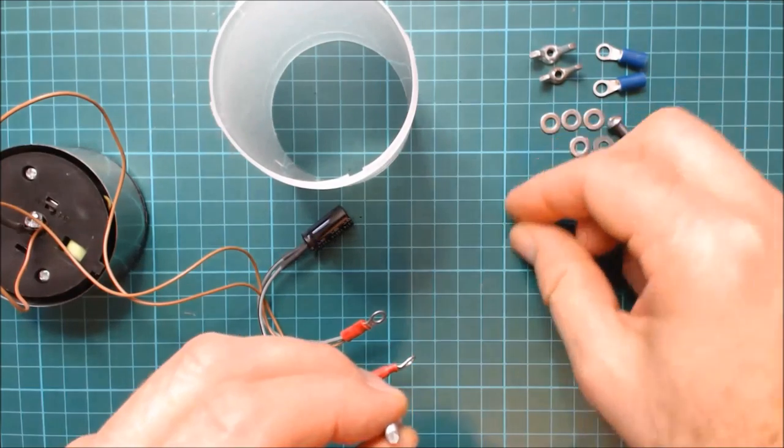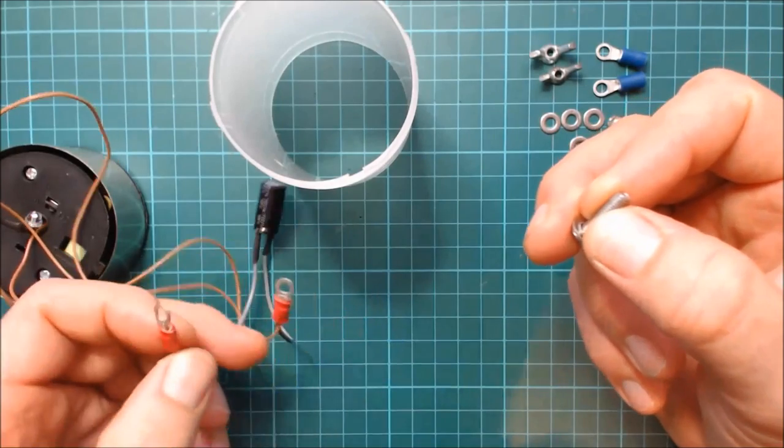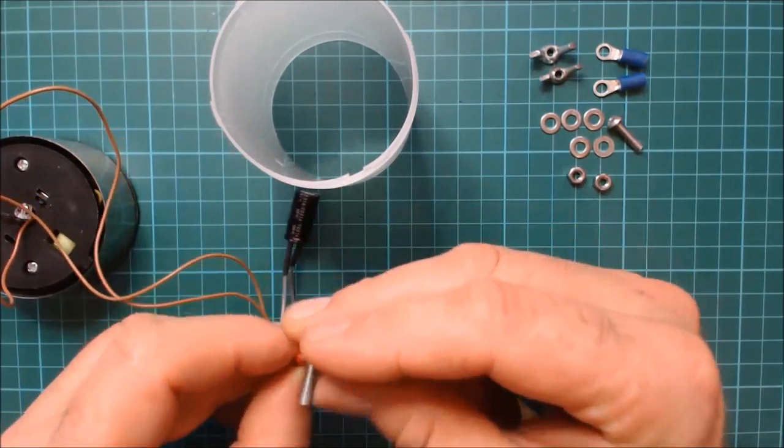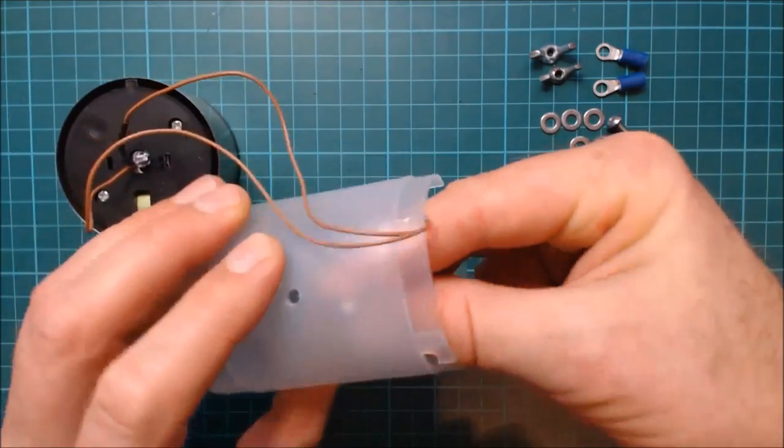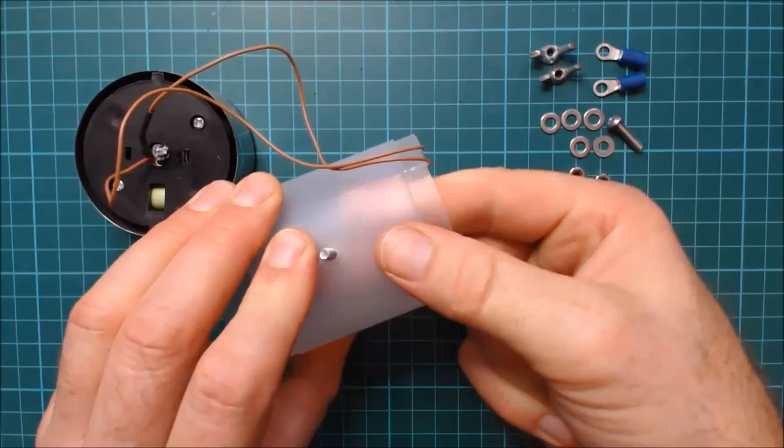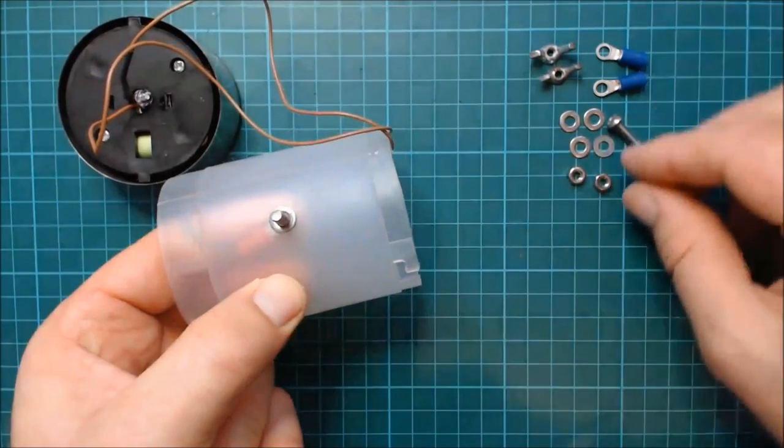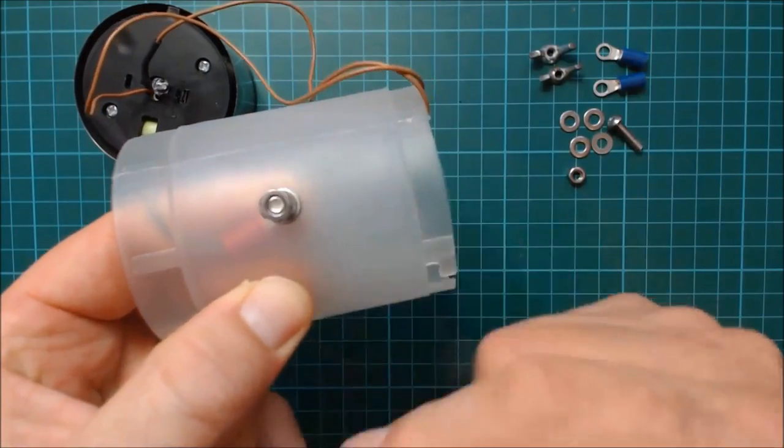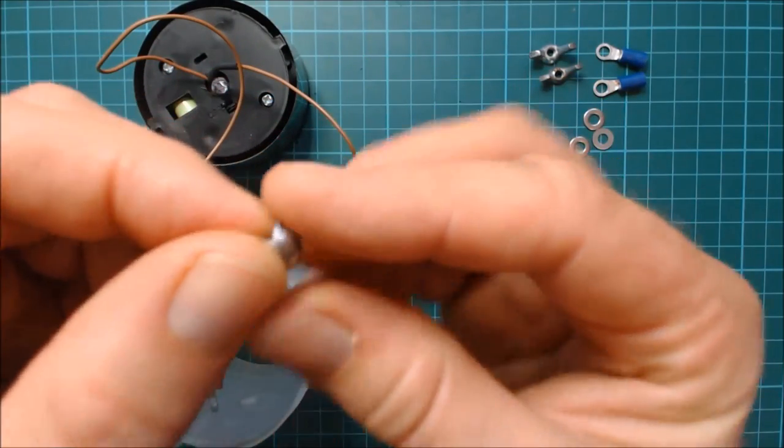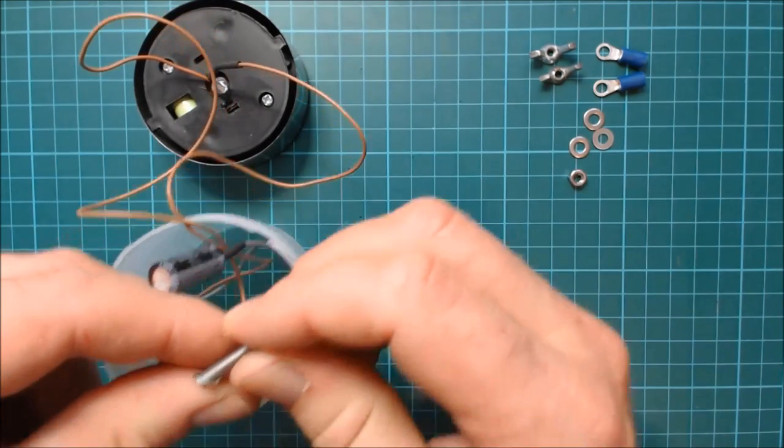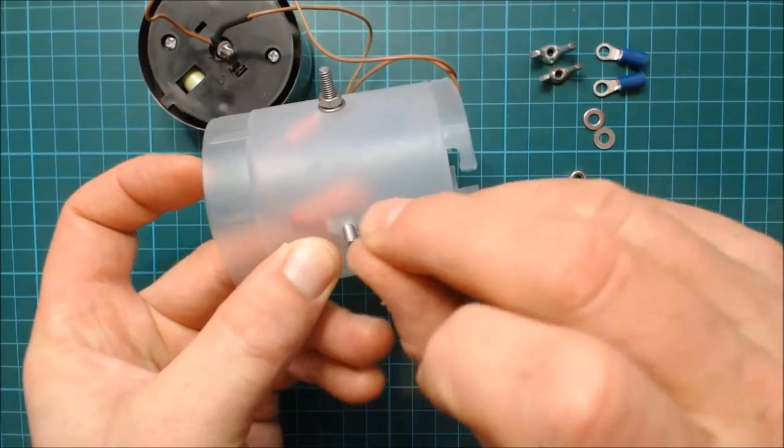Now we're going to install an M4 screw and washer through the ring terminal, through the case, and then tighten it up with another washer and nut. And the same thing again for the second M4 screw and washer. Pass it through the ring terminal, then through the second hole in the case, and then tighten it up with another washer and nut.